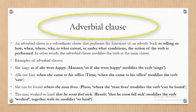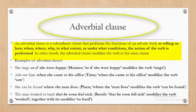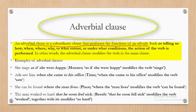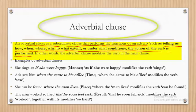Adverbial clauses are subordinate clauses that perform the function of an adverb. Adverbs tell us more about the verb, adjective, or another adverb. They indicate how the verb is performed, when, where, why, to what extent, and under what condition the action of the verb occurs.